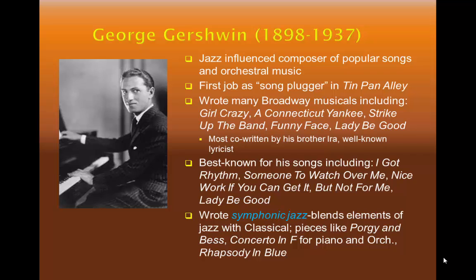One of Gershwin's best-known works is the opera Porgy and Bess, written in 1935. It was controversial at the time because Gershwin, a white Jewish boy from Manhattan, dared to write a work celebrating the African-American culture of the Gullah community of coastal South Carolina. The piece eventually overcame its racially charged history and is still performed all over the world today. Gershwin's music is all very tonal, but certainly shows influence of modern composers of the day, like Claude Debussy and Maurice Ravel, two impressionist composers.